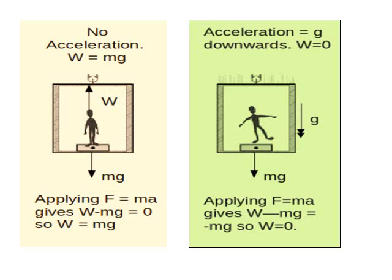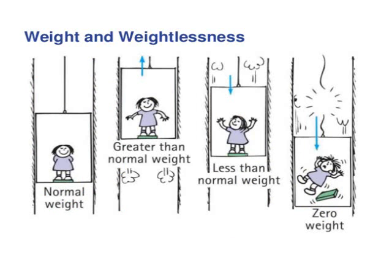The apparent weight of the man becomes 0 because both the man and lift are moving downward with the same acceleration due to gravity. A person develops a feeling of weightlessness when he falls under gravity because at that time the weight will be 0.